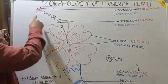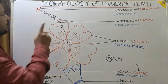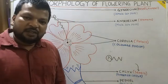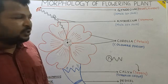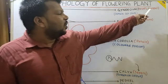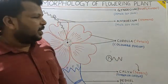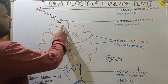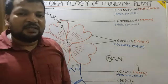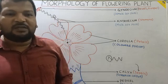Here you can see there are five different bulging structures. These are collectively called Gynoecium, which is the female sex part. The individual unit of Gynoecium is called Pistil or Carpel. Since both Androecium and Gynoecium are present, the flower is bisexual in nature.